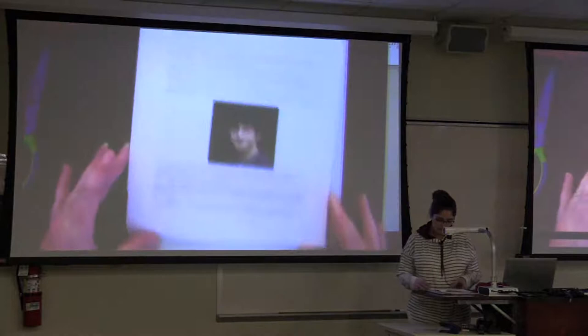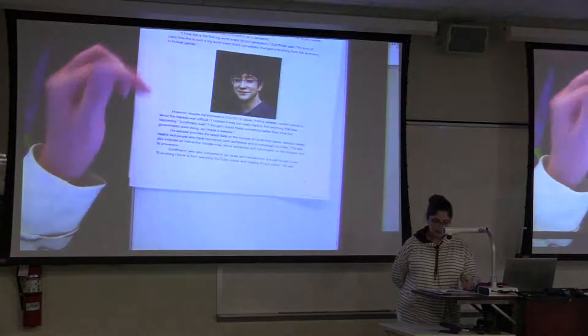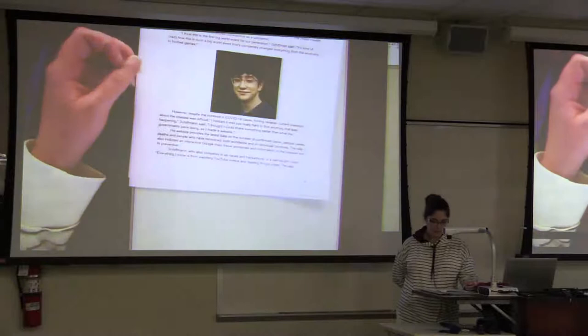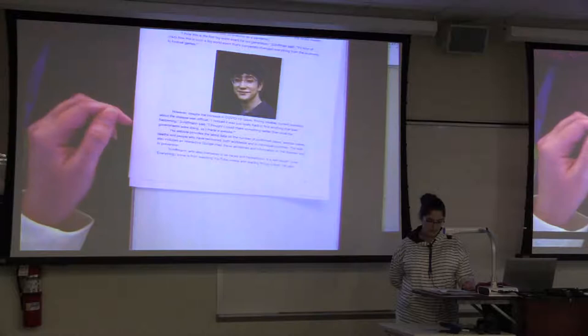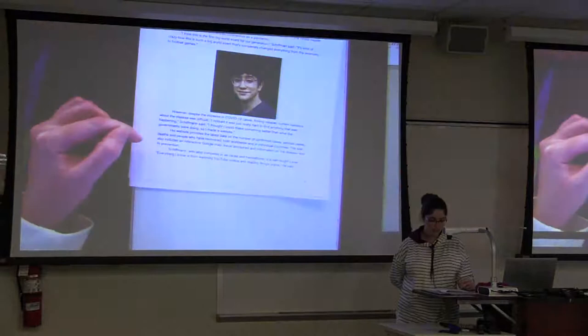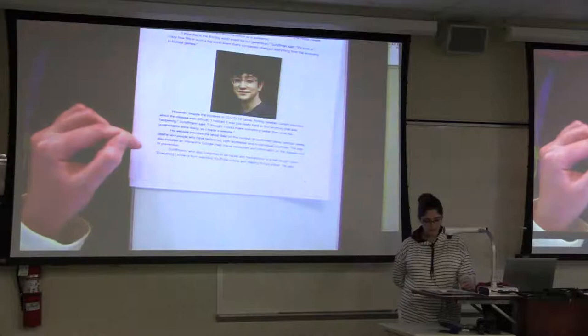However, despite the increase in COVID-19 cases, finding reliable current statistics about the disease was difficult. I noticed it was just really hard to find anything that was happening, Schiffman said. I thought I could make something better than what the governments were doing, so I made a website. His website provides the latest data on the number of confirmed cases, serious cases, deaths, and people who have recovered, both worldwide and in individual countries. The site also includes an interactive Google map, travel advisories, and information on the disease and its prevention.